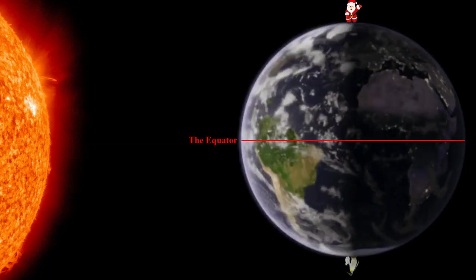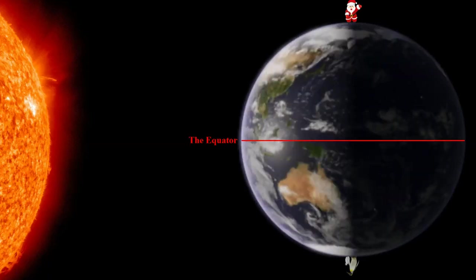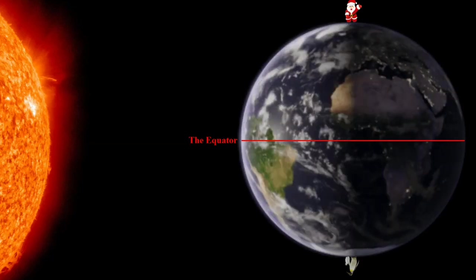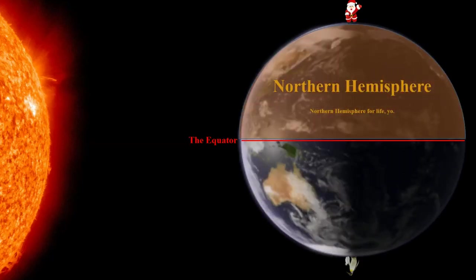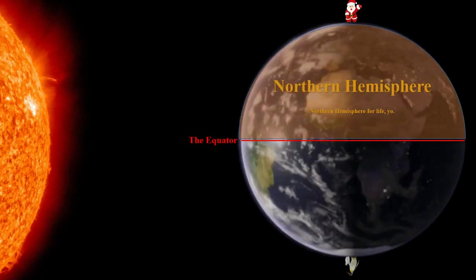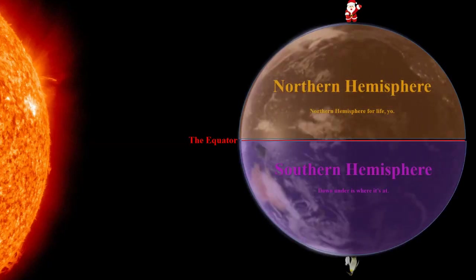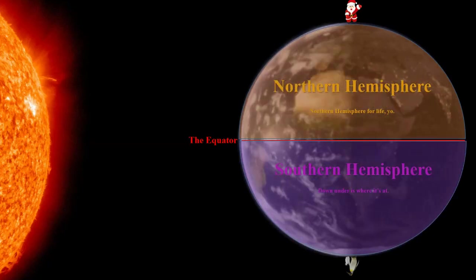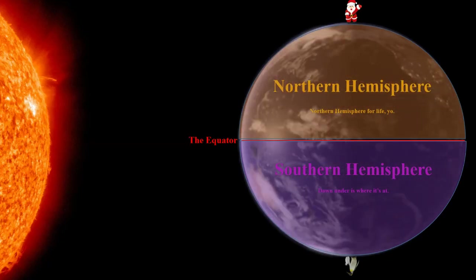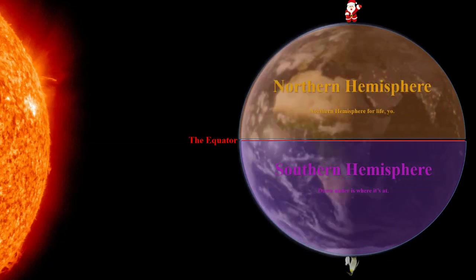The equator is the line that marks the exact middle between these two poles, neatly dividing the Earth into two equal parts. The one on top is called the Northern Hemisphere, and the one on bottom is called, wait for it, the Southern Hemisphere, with hemisphere being a big, fancy word meaning half of a sphere.